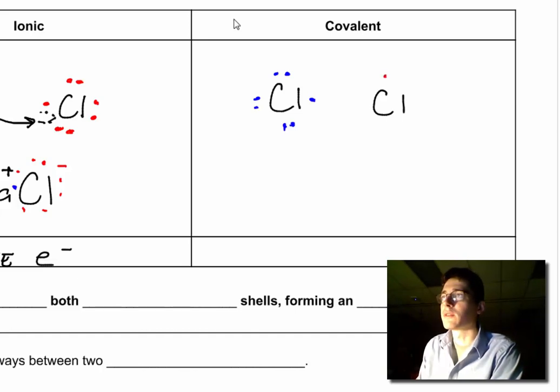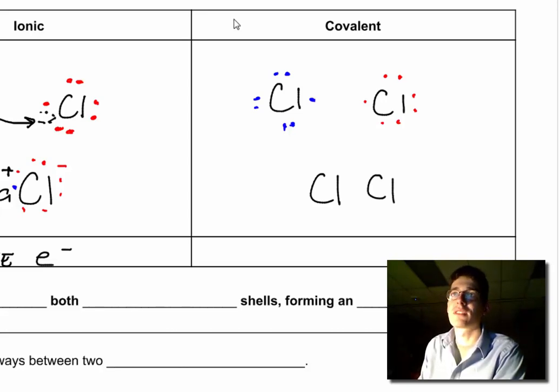Then we'll do the other chlorine in red: two, three, four, five, six, seven. When these come together, I can't donate my electron. I have to actually overlap the valence shell. When they form the bond covalently, they're cooperating or combining the valence electrons. They come closer together so that the shared pair rests between them.